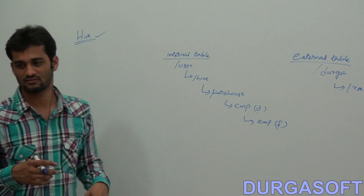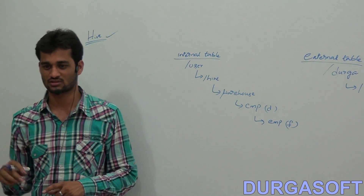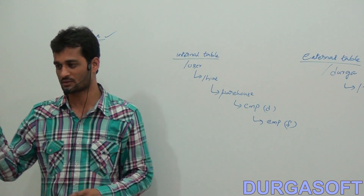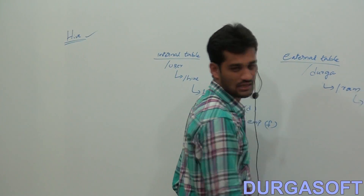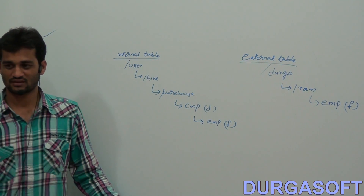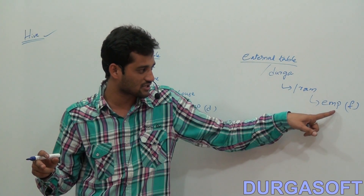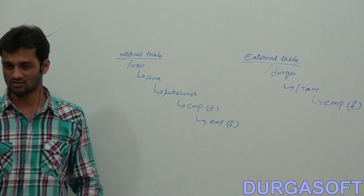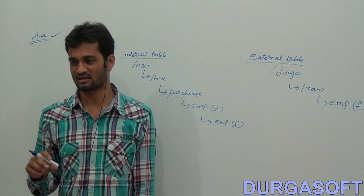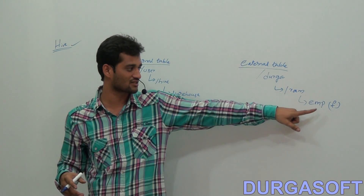To load data into external tables, you use exactly the same commands as for internal tables: load data local inpath for local file system, or load data inpath for HDFS, into table table_name. Your data will be directly loaded into the location /durga/ram. The file emp will be stored directly in ram, because your table is referring to that external location /durga/ram.